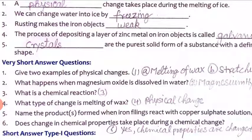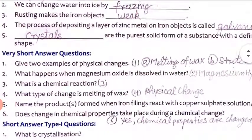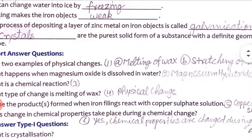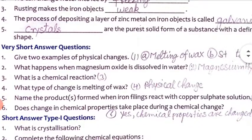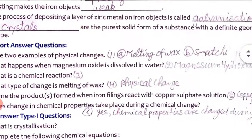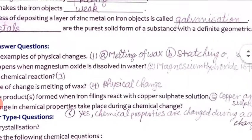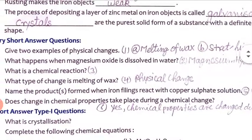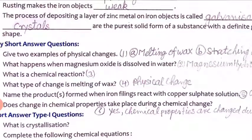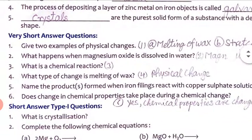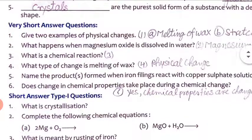Rusting makes the iron object weak. The process of depositing a layer of zinc metal on an iron object is called galvanization. Crystals are the purest solid form of substances with a definite geometrical shape — this is the definition of a crystal.